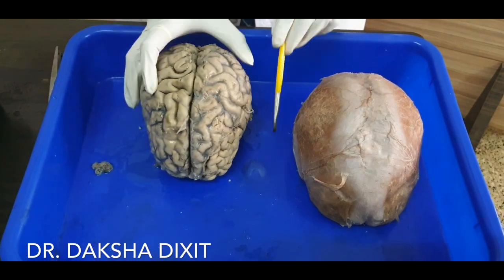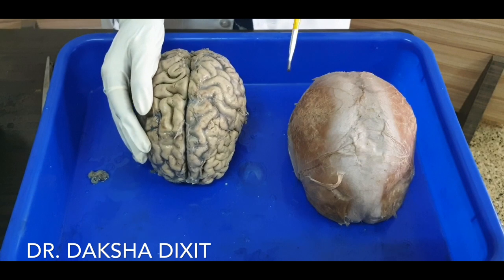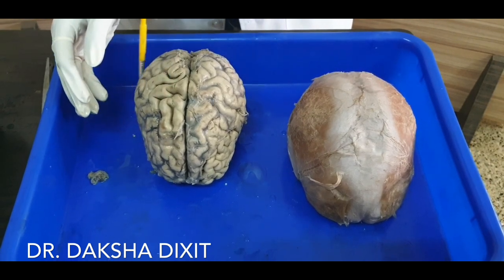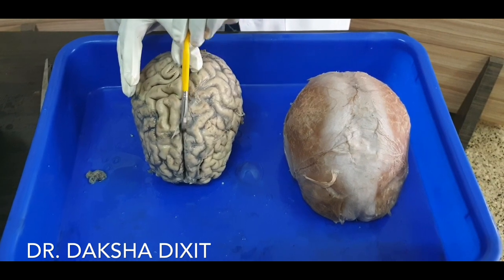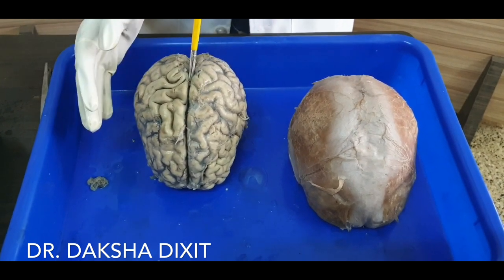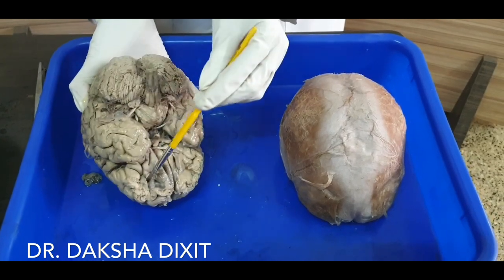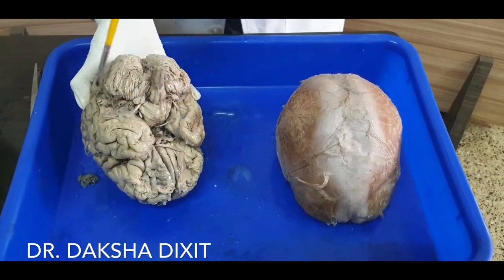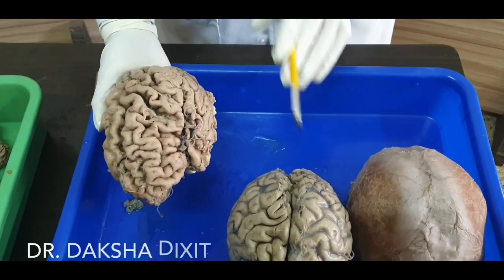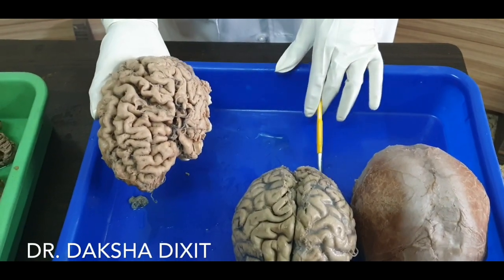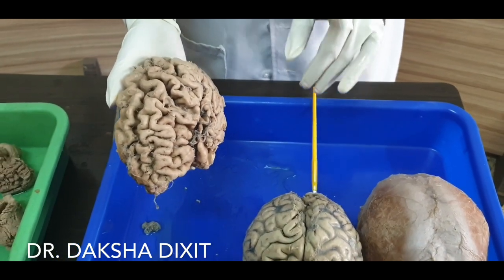The three surfaces: this curved surface is the superolateral surface; the surface seen in the midline as a flat surface is the medial surface; and the third surface is the inferior surface. To get a clearer picture of the borders and surfaces, let us look at just one single cerebral hemisphere.